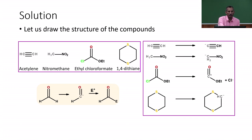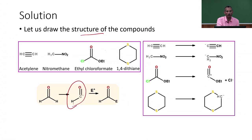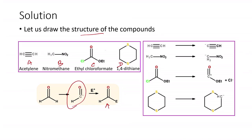To solve the problem, we draw the structures of all four compounds. The formyl anion equivalent is the one that, when reacted with an electrophile, gives a carbonyl compound — specifically the CHO unit. We need to determine which of the four compounds A, B, C, and D can act as the formyl anion equivalent.